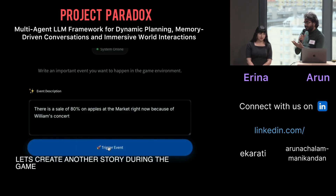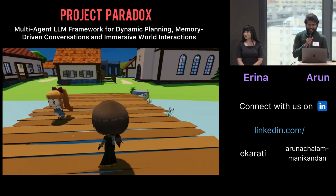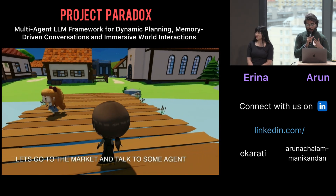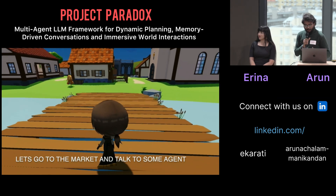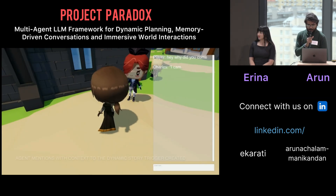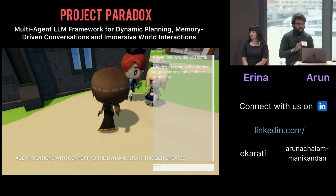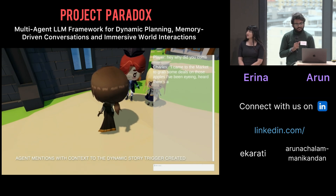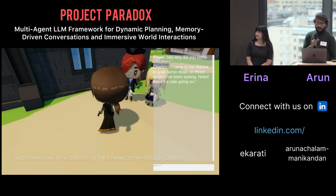Let's create a realistic one — there's a sale of apples at the market. Let's see how our agents and the game react to this dynamically created story event. An agent says: 'I came to the market to grab some deals on those apples I've been eyeing. Heard there's a sale going on.'